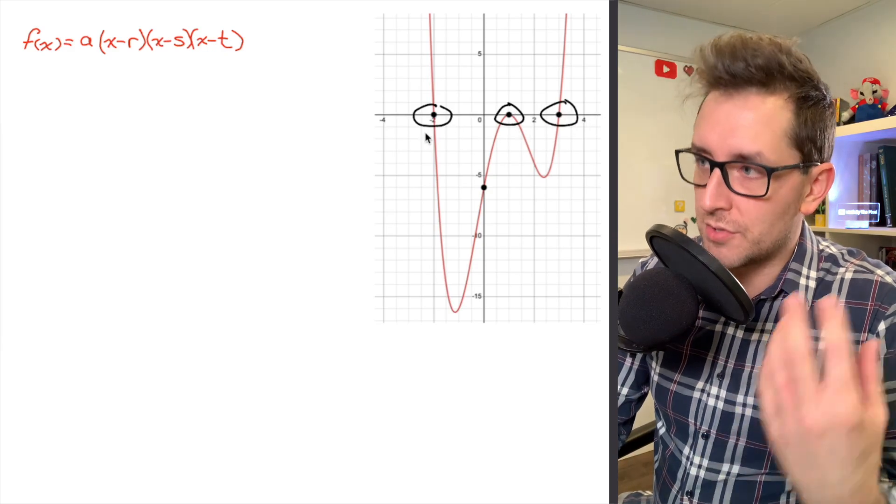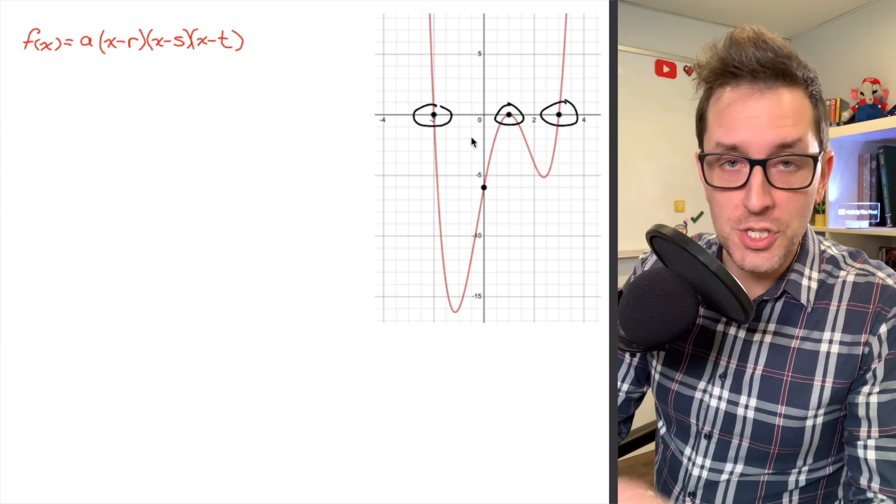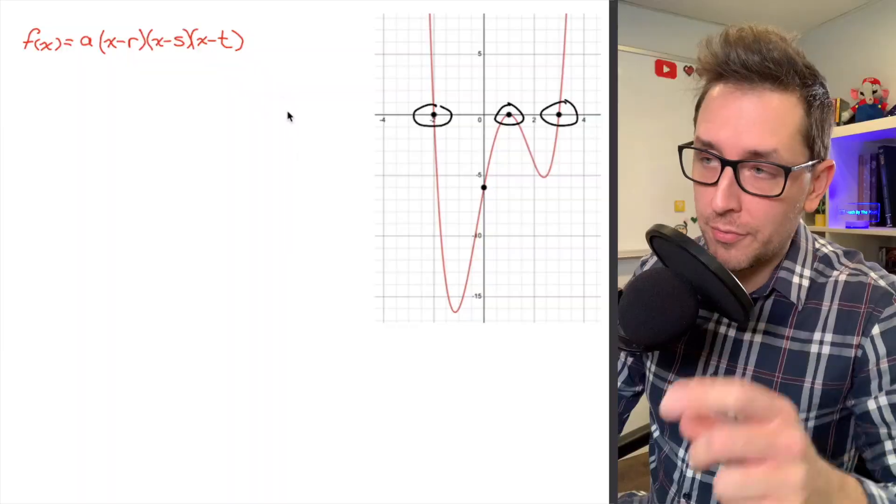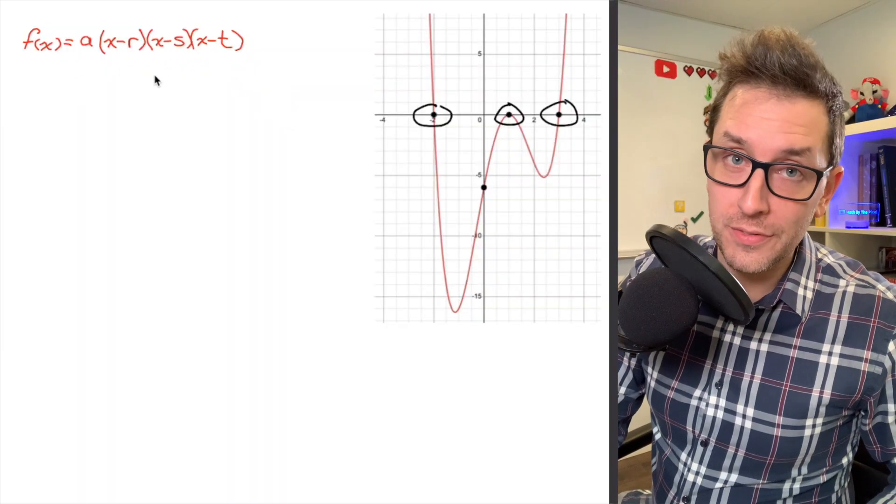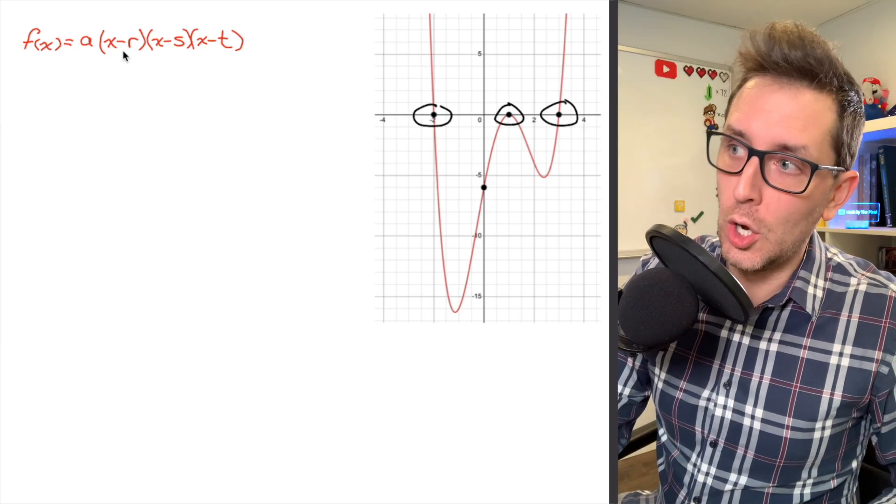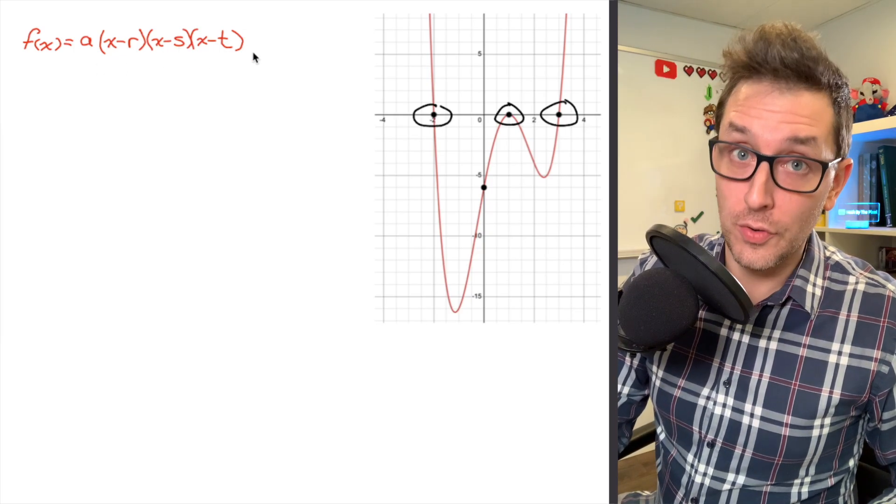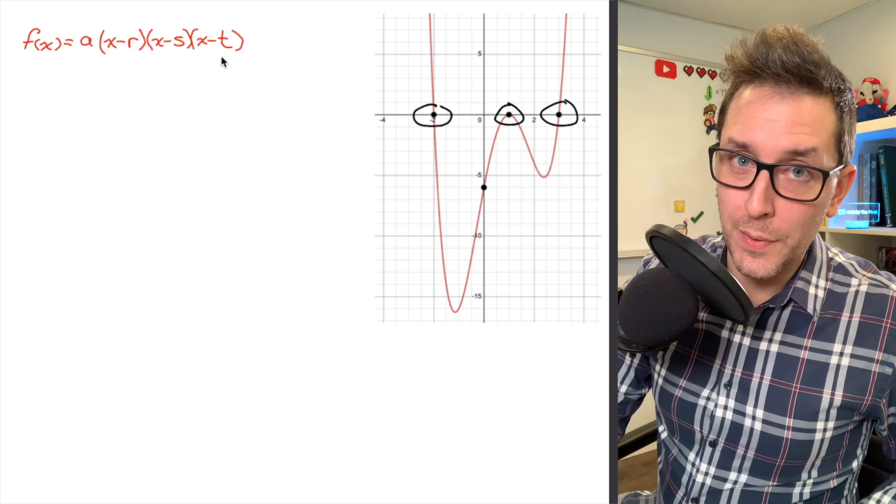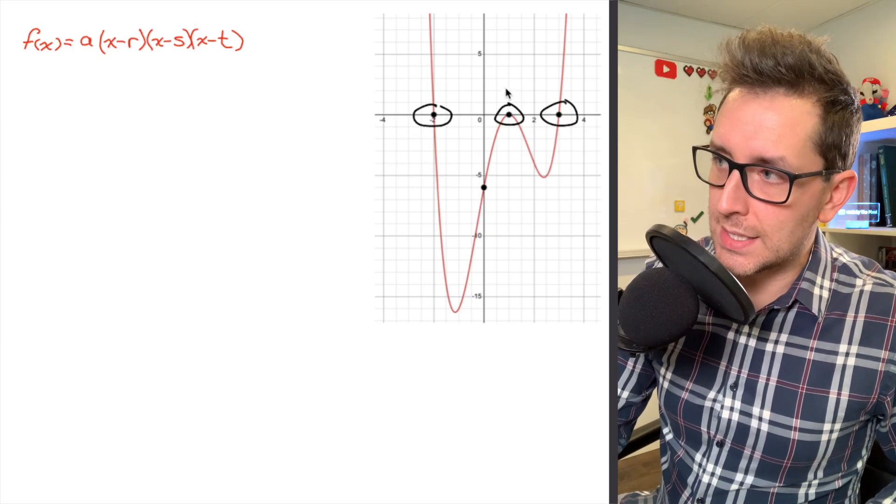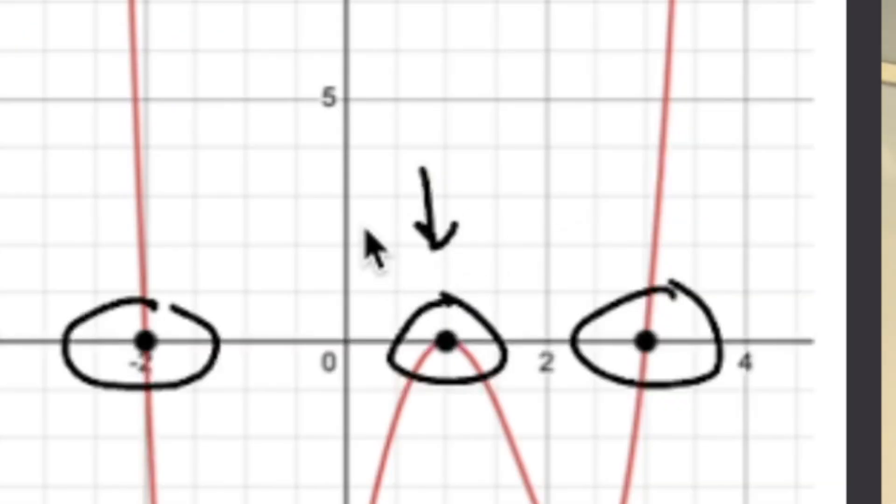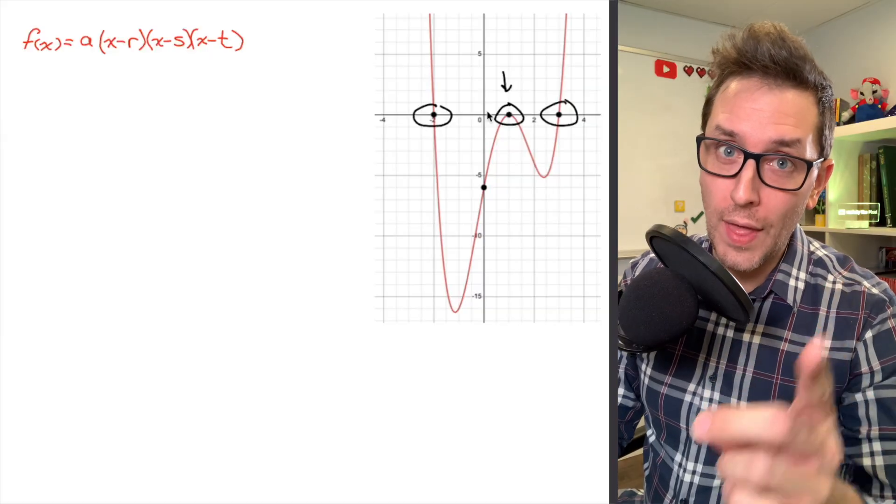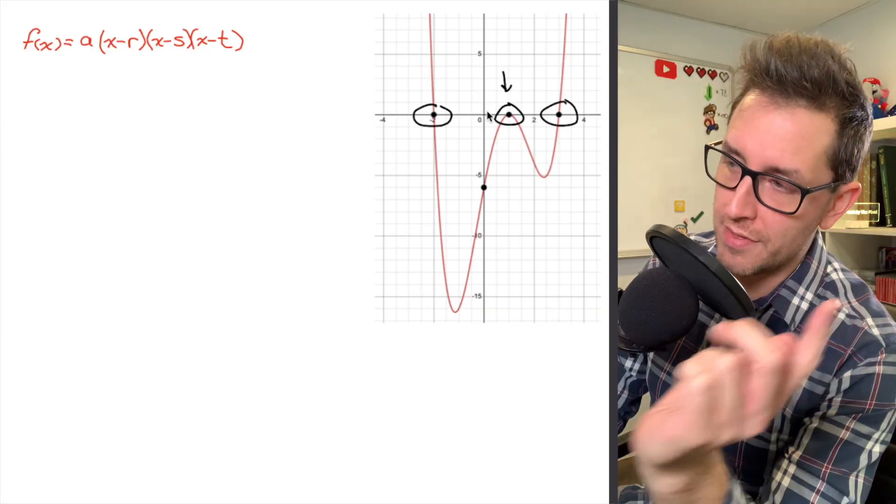Now at first glance, it appears that I have just a simple polynomial function with three x-intercepts, but if we look for the equation of this polynomial function in this particular form here, where I have a set of brackets for each x-intercept, we're going to run into a little bit of trouble, and that's all because of this pesky x-intercept right here located at 1.